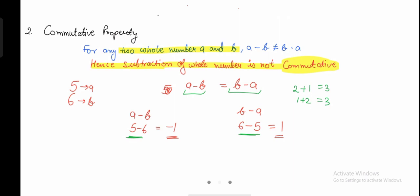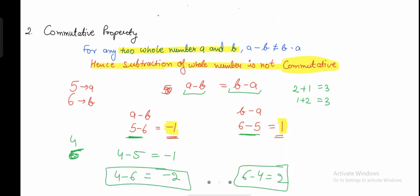For example, 5 minus 6 gives minus 1, while 6 minus 5 gives 1. You can try different numbers: 4 minus 5 gives negative 1; or choosing 4 and 6 — 4 minus 6 gives negative 2, while 6 minus 4 gives positive 2. The answers are different when rearranging the order, which means neither the same answer nor a whole number is guaranteed. So commutative property does not hold for subtraction.